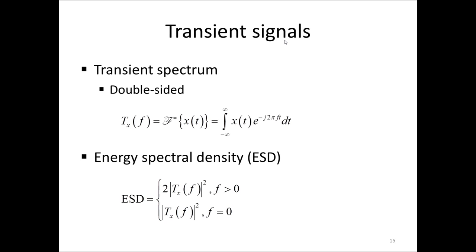The transient spectrum is not very common in commercial measurement systems for noise and vibration analysis. Instead, usually a single-sided and squared variant is available, which is called energy spectral density, or simply ESD. This can easily be computed from the transient spectrum, as indicated here.